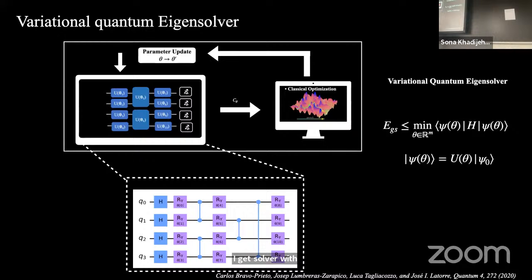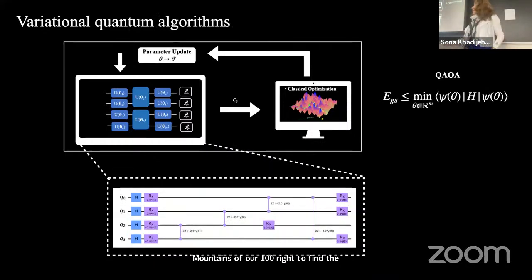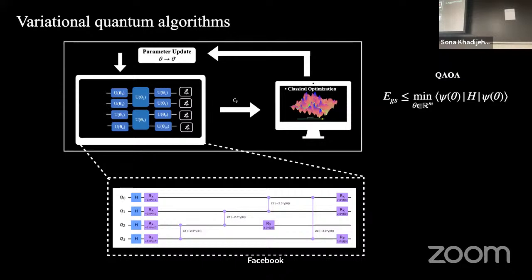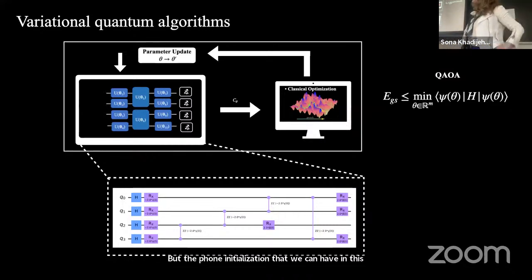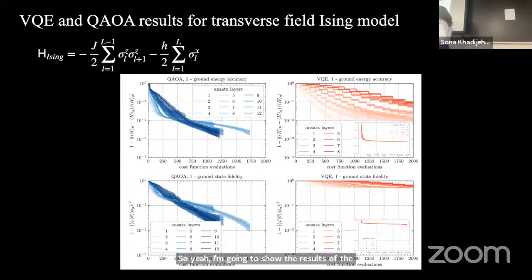A slightly different variation is the quantum approximate optimization algorithm, which is more physics-inspired and akin to adiabatic computing. The parameterization in this model is more closely related to the Hamiltonian whose ground state we are trying to find. Comparing QAOA with VQE for the transverse-field Ising model, while overall QAOA reaches a better approximation earlier, as we increase the number of steps the optimization becomes harder. For the XXZ model, QAOA does slightly better in reaching better energy and fidelity, but overall has some optimization problems. Therefore, for the hardware implementation we use VQE for both the XXZ and transverse-field Ising models.